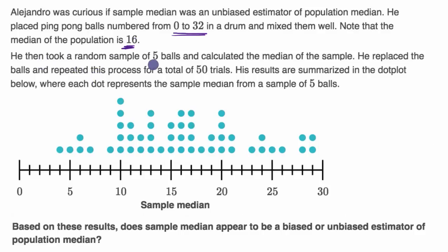He then took a random sample of five balls and calculated the median of the sample. So we have this population of balls and we know the population median is 16, but then he starts taking a sample of five balls, so n equals five, and he calculates a sample median.